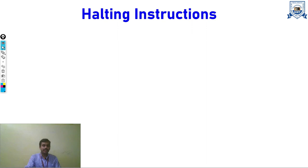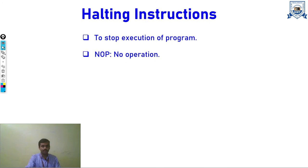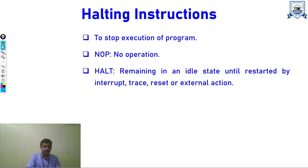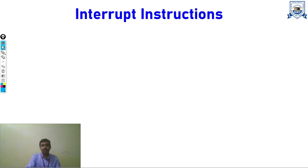Halting instructions are used to stop execution of a program. 'NOP' means no operation — no operation will be performed on the operands. 'HALT' is called when we have to keep our program in an idle state until it is restarted by an interrupt, trace, or any external action.